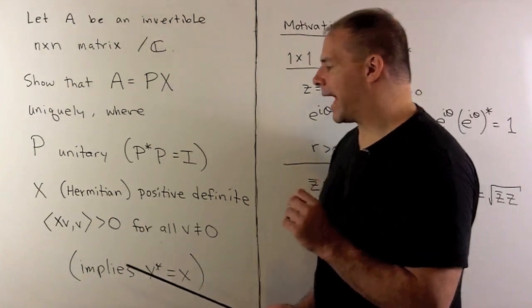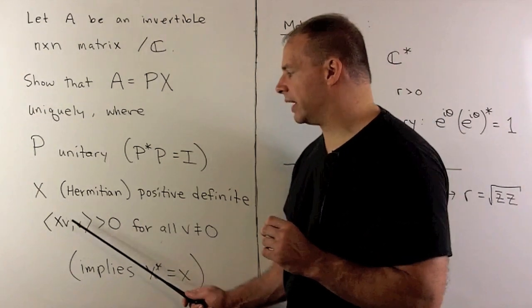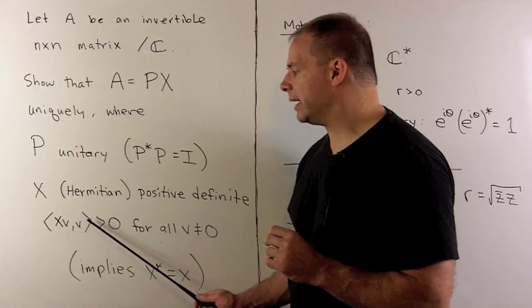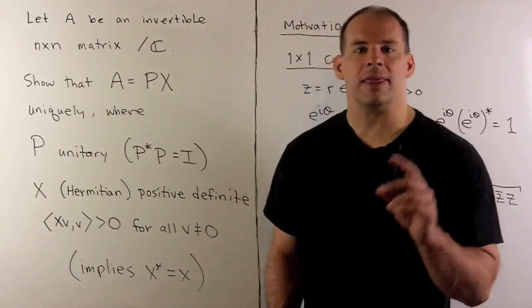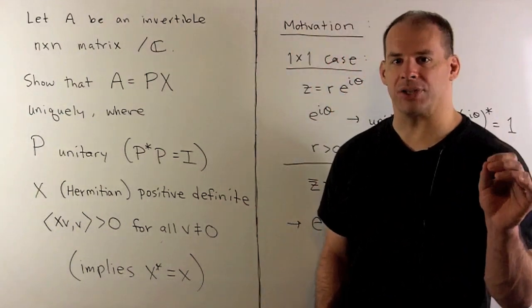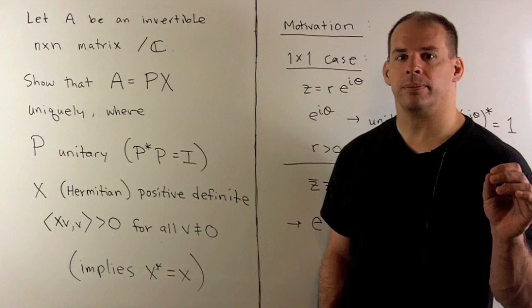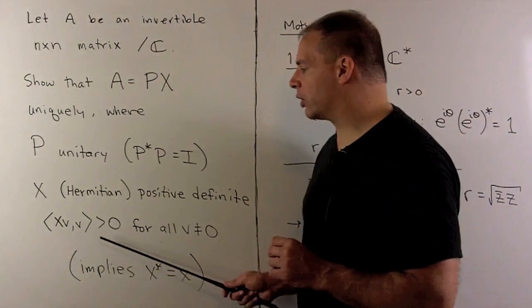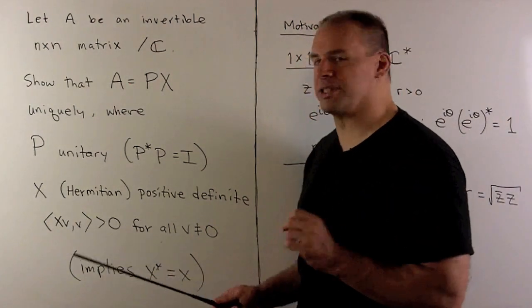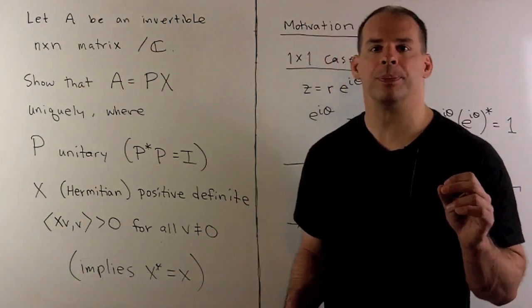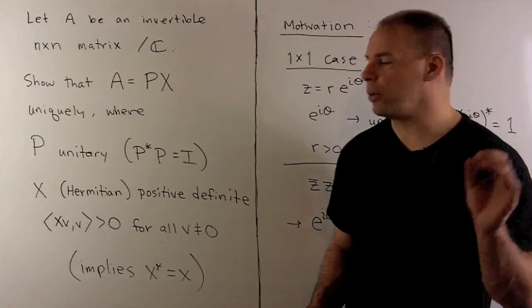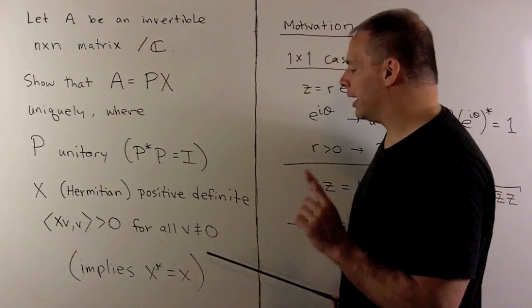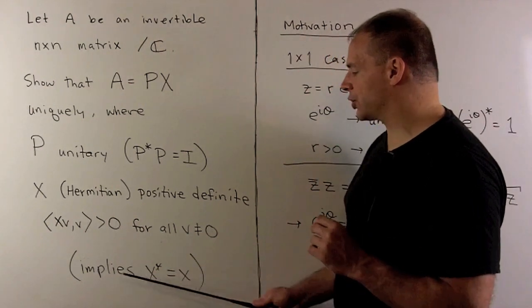Hermitian positive definite means we take X times v, inner product with v, and that's always real and positive. Here we're using the standard Hermitian inner product on C^n, and we note that this condition implies that X is Hermitian.